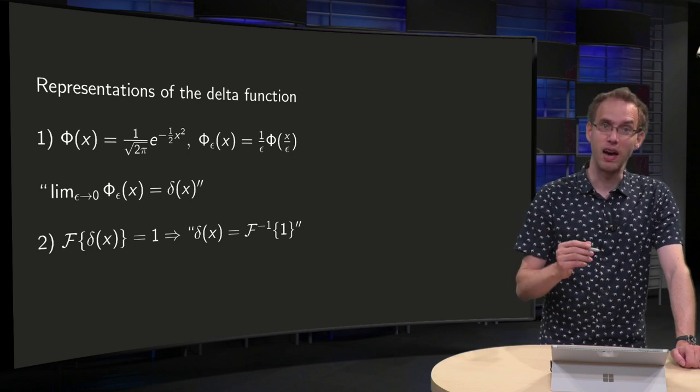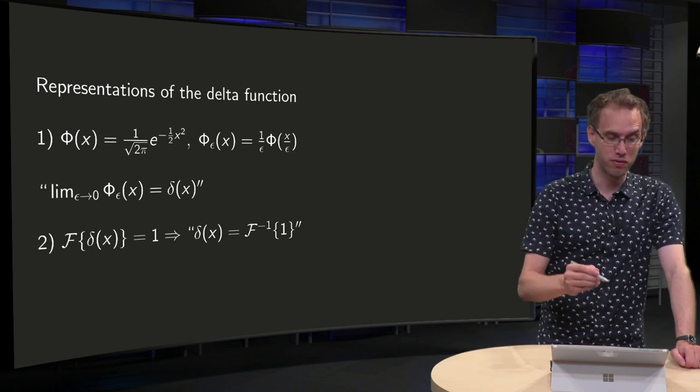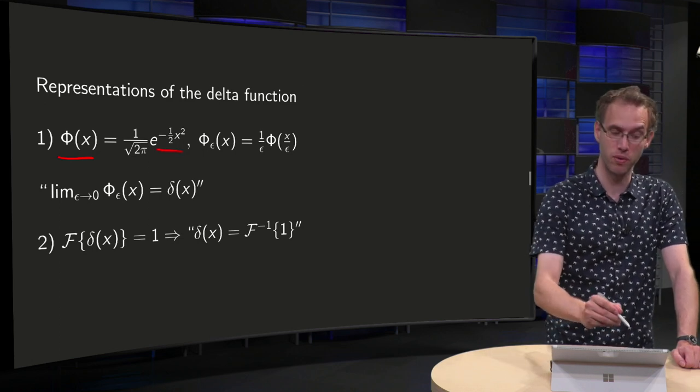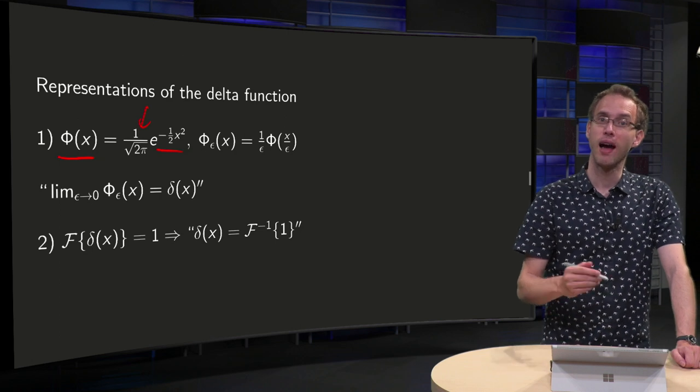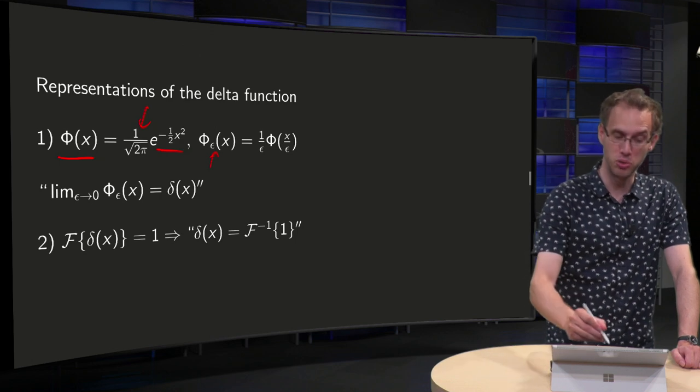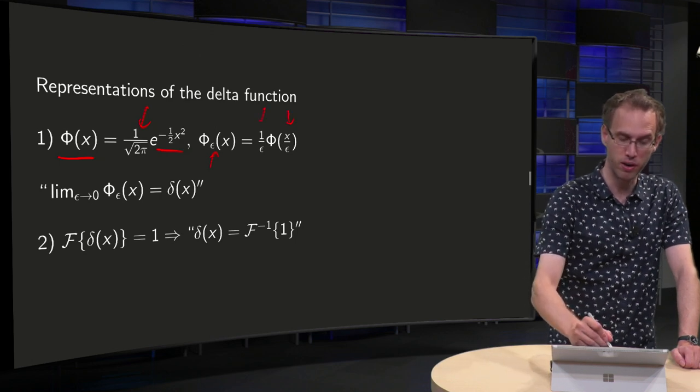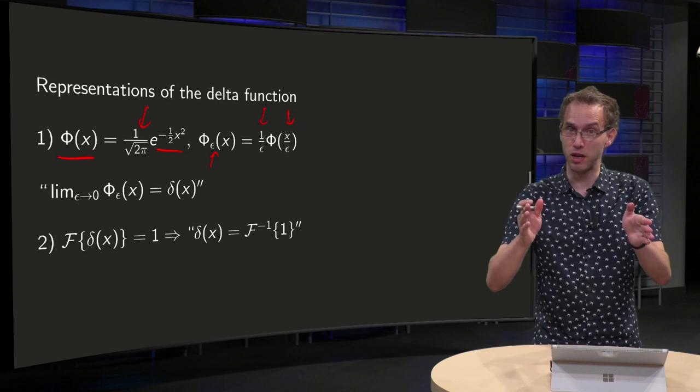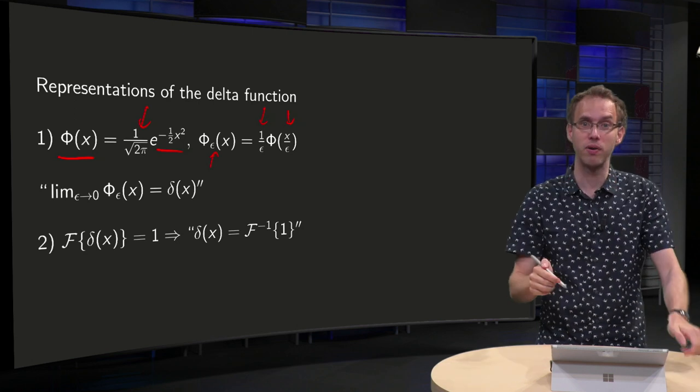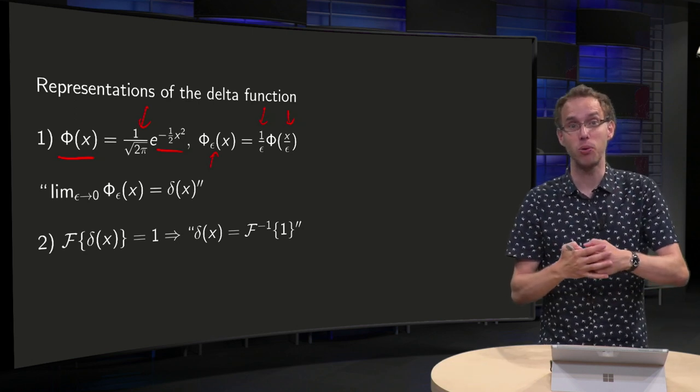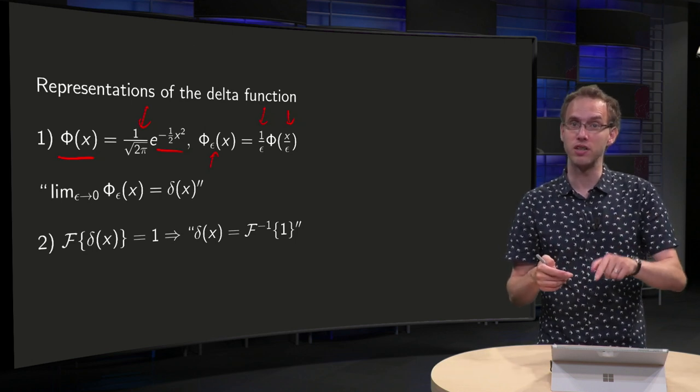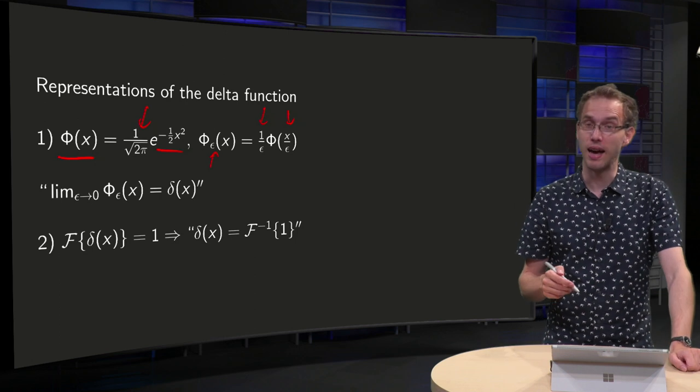So let's repeat, we had a representation of the delta function by taking Gaussian φ(x) equals e to the power of minus one half x squared and a normalization factor. And then if we computed φ_ε(x) by substituting x over ε and 1 over ε over here, we got if we took ε to zero smaller and smaller peaks, but still area one, so our φ_ε(x) is a representation of the delta function. If you take ε to zero, you get this delta spike at zero.